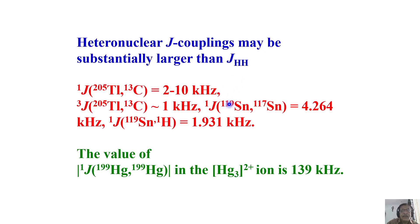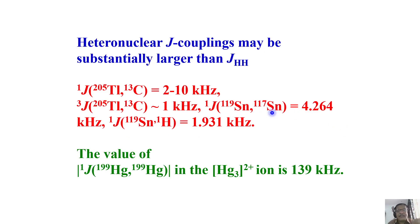In exotic nuclei, the chemical shift range can be very large. For example, in cobalt and similar nuclei, the chemical shift can go up to 65,000 ppm — really large. Similarly, couplings can be quite large: thallium to carbon-13 three-bond coupling can be of the order of 1 kilohertz. For tin, one-bond tin-proton coupling is very small, but tin-to-tin coupling can exist — tin has two isotopes. We can even detect coupling between two dilute spins of very small abundance.